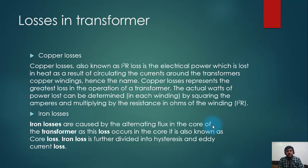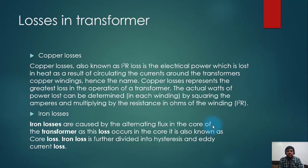Copper losses are also known as I²R losses. It is the electrical power lost as heat as a result of current circulating through the transformer copper winding — hence the name copper losses. This represents the greatest loss in the operation of a transformer. The actual watts of power lost can be determined in each winding by squaring the current and multiplying by the resistance in ohms of the winding.